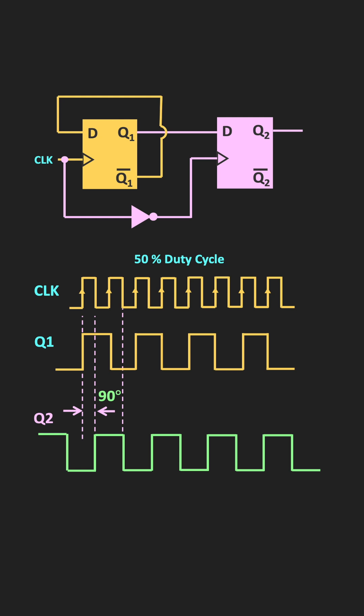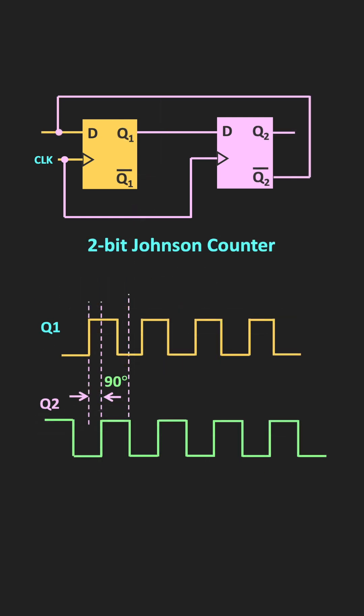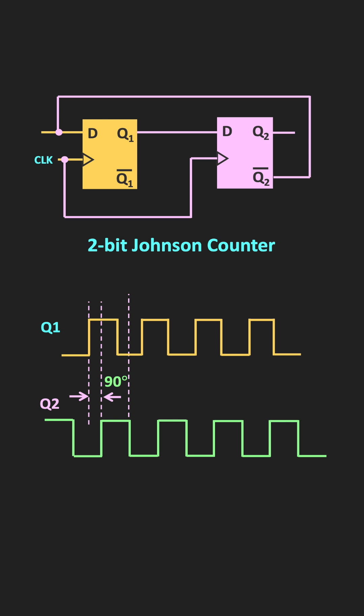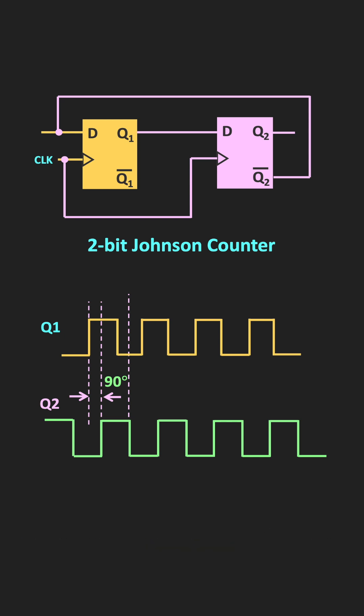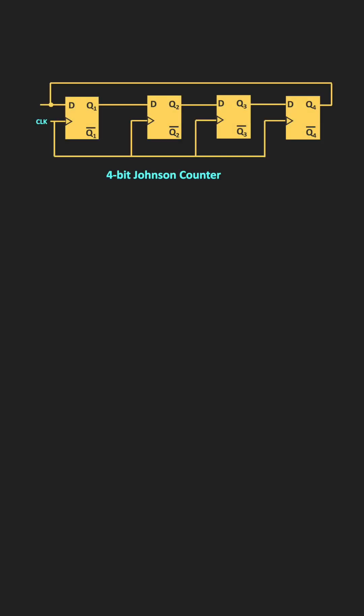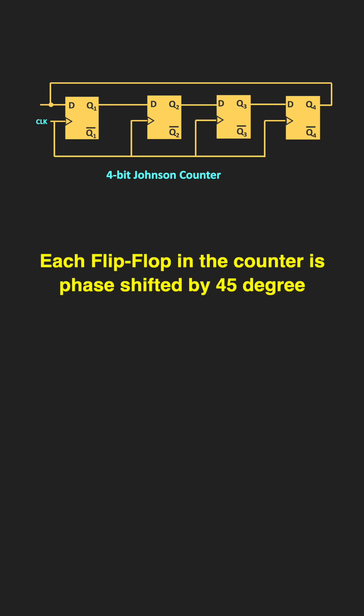Apart from this, using a 2-bit twisted ring counter or a 2-bit Johnson counter, it is also possible to generate two signals which are 90-degree phase shifted with respect to each other. Because as you know, an N-bit Johnson counter has 2N states, and each output of the flip-flop is phase shifted from each other by 360 divided by 2N degrees. For example, if we have a 2-bit Johnson counter, then the outputs are phase shifted from each other by 90-degree. On the other hand, if we have a 4-bit Johnson counter, then each flip-flop is phase shifted from each other by 45-degree.